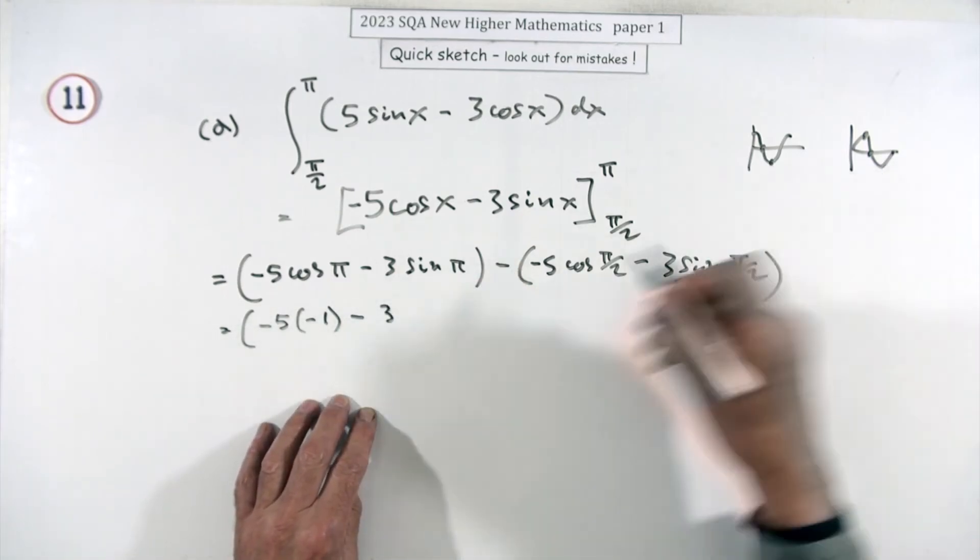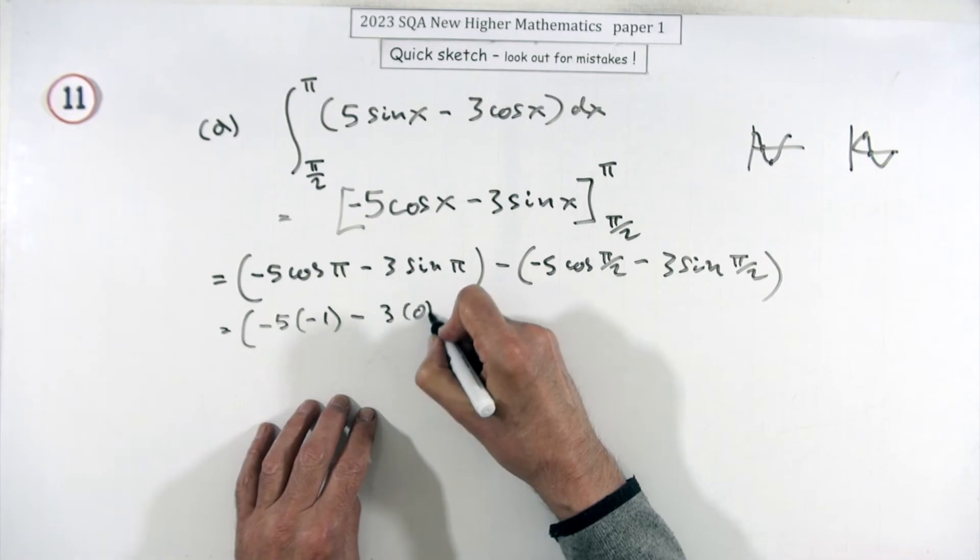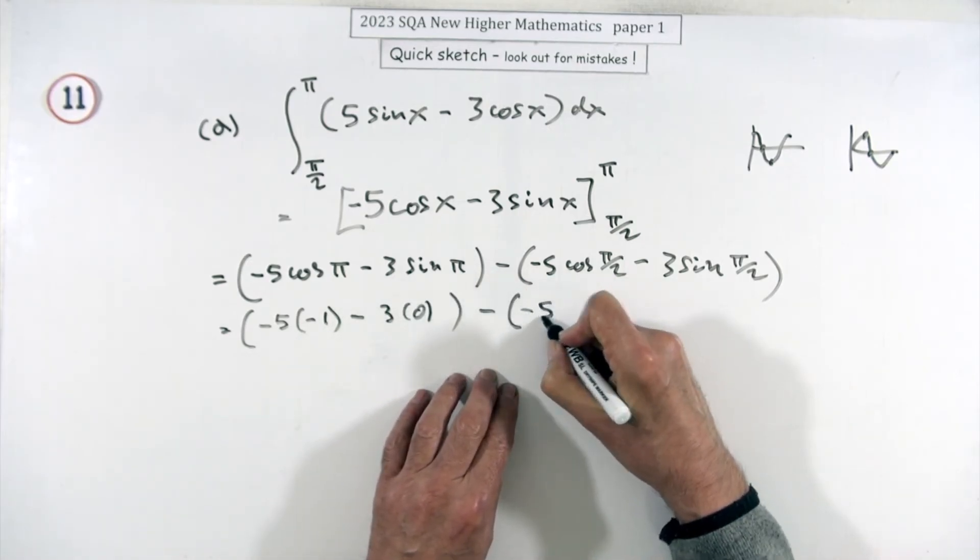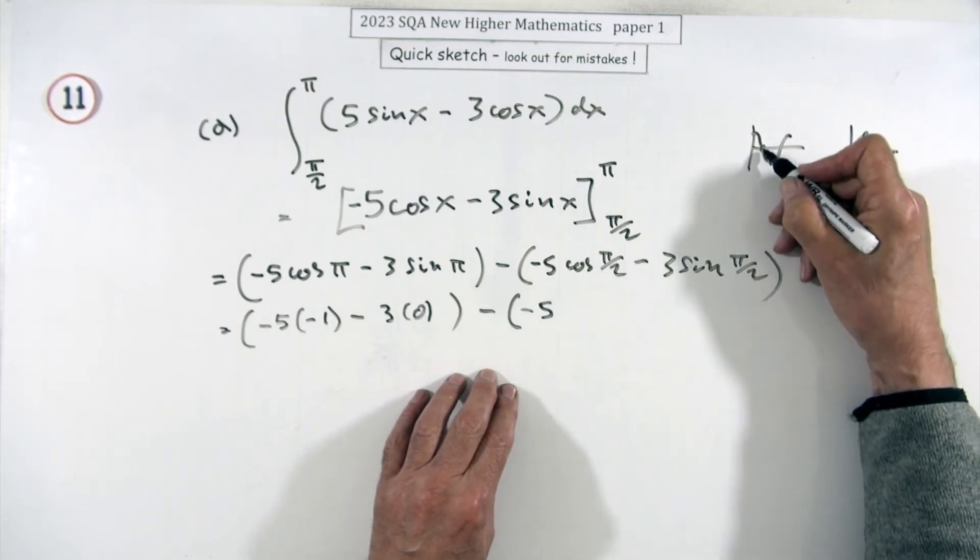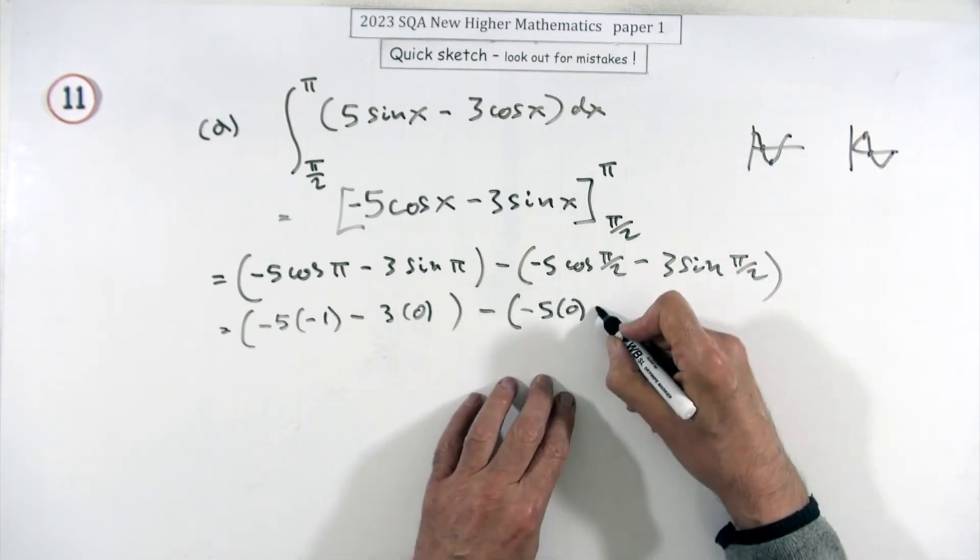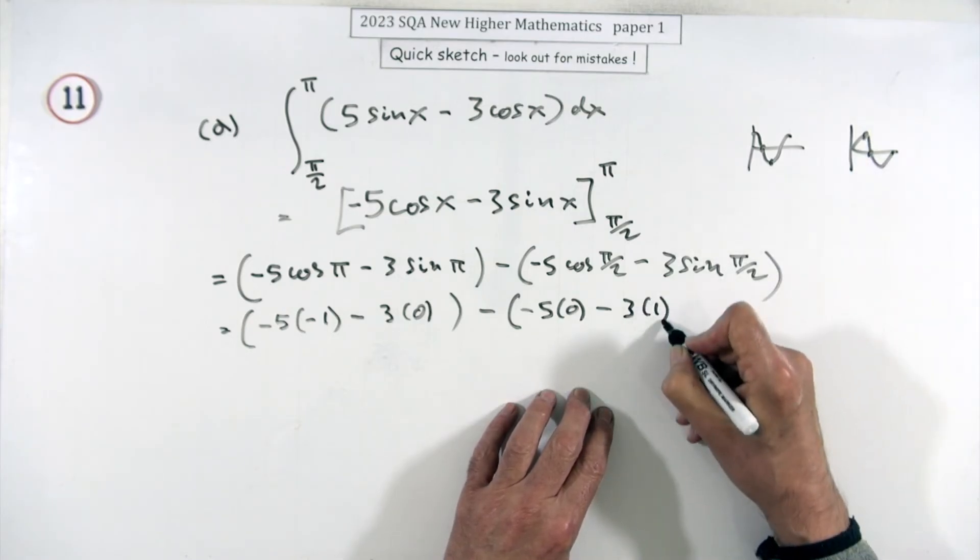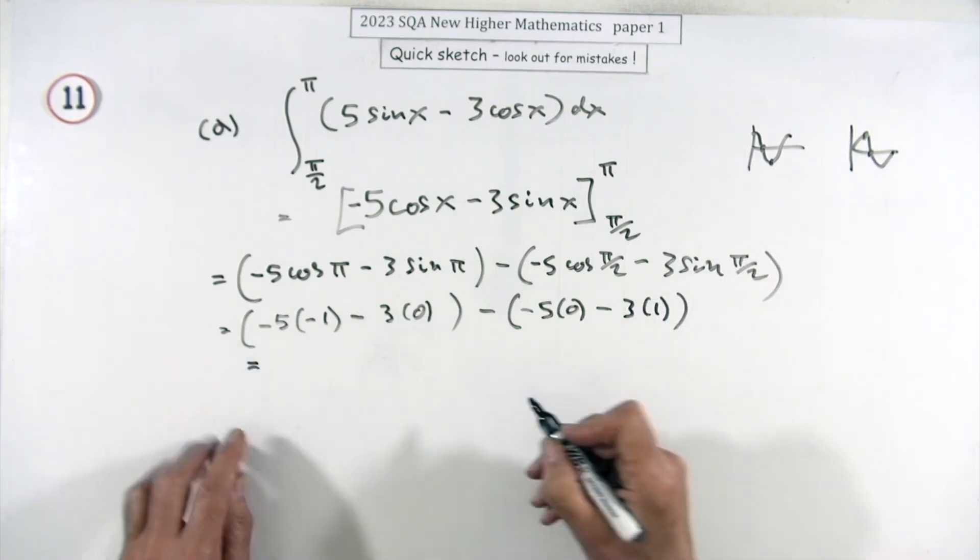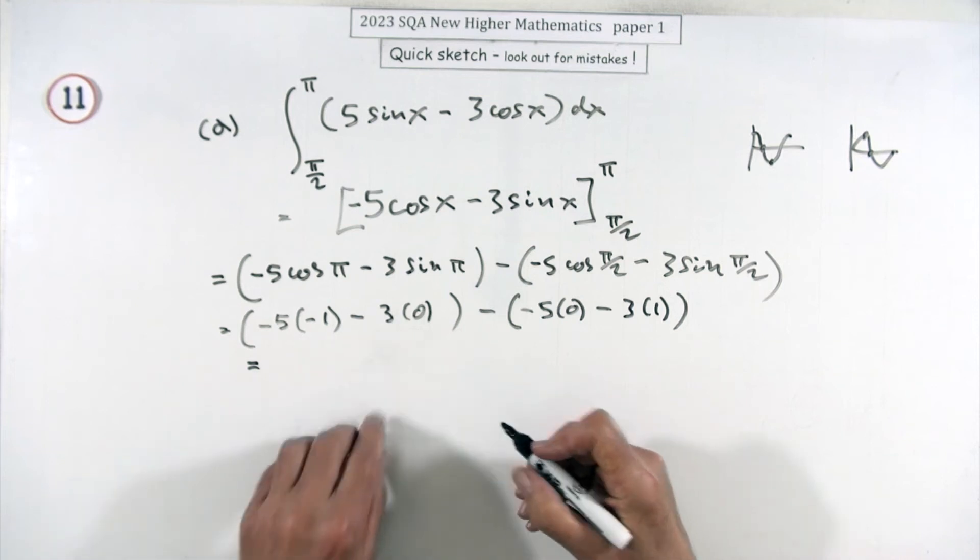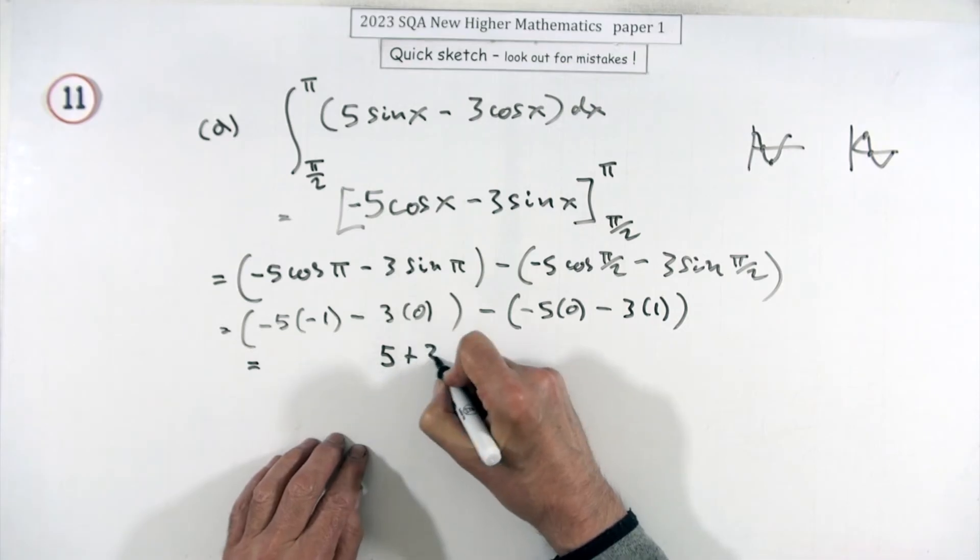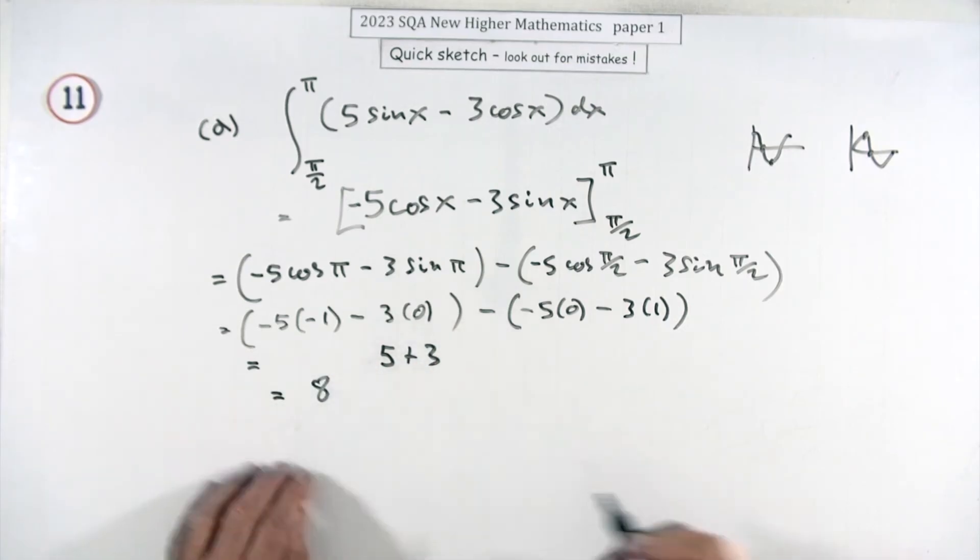Cos of π is negative one, so that's negative five times negative one, which is five. Take away three times sine of π, which is zero. Then take away negative five times cos(π/2), which is zero, minus three times sine(π/2), which is one.